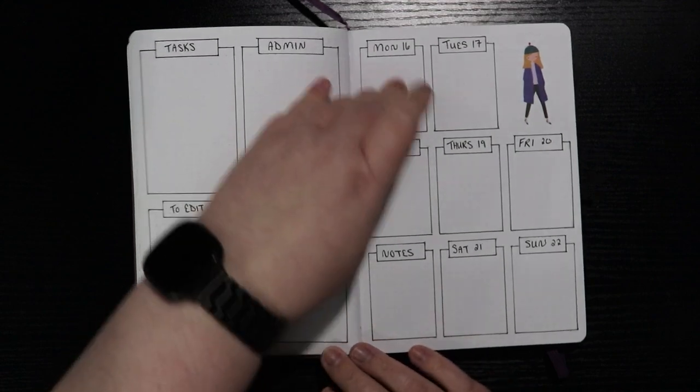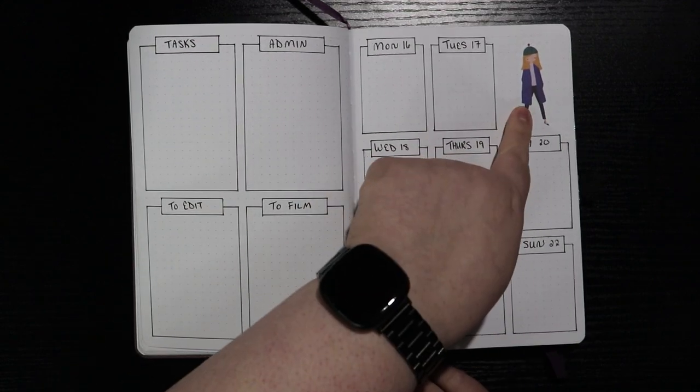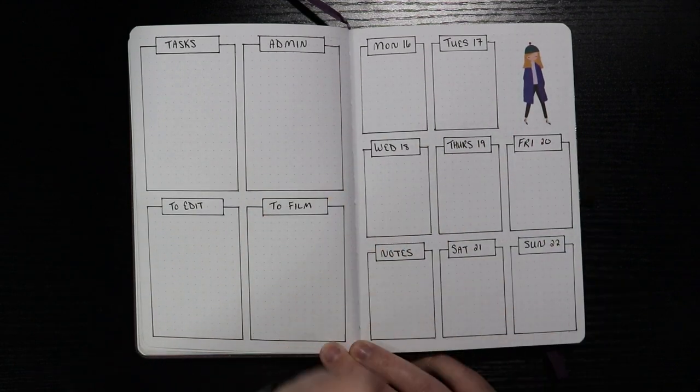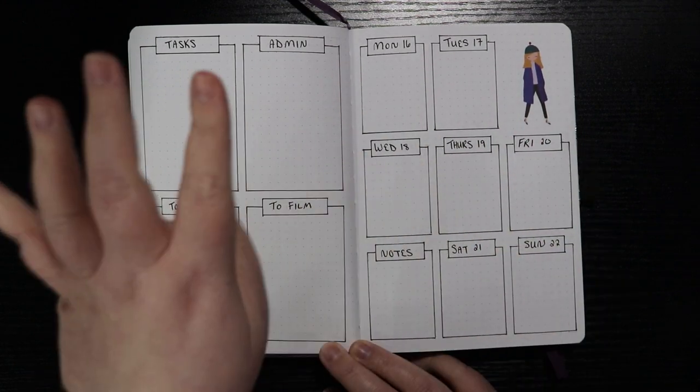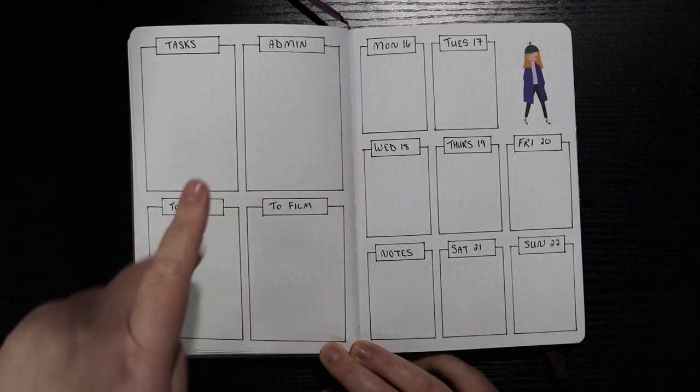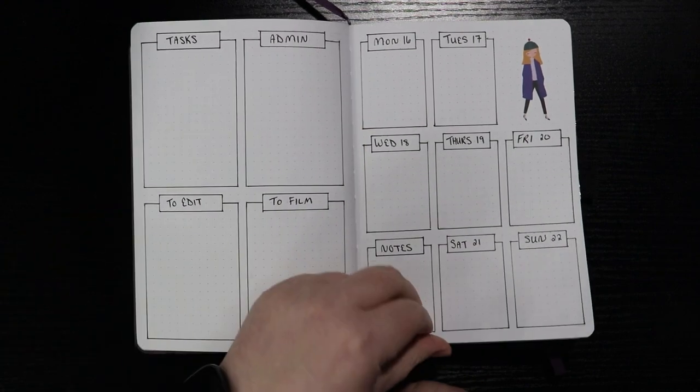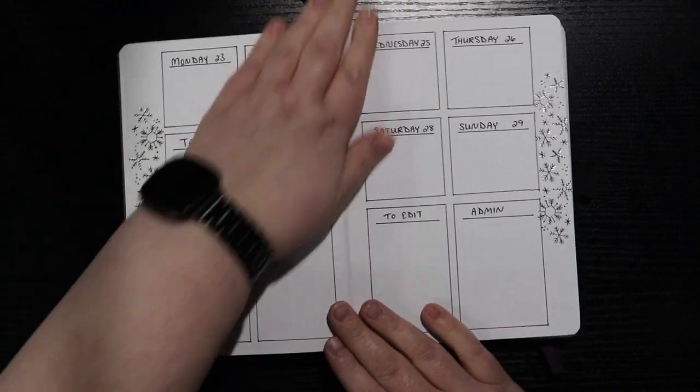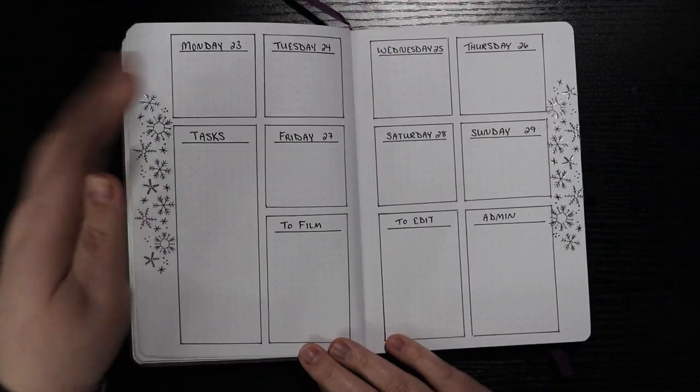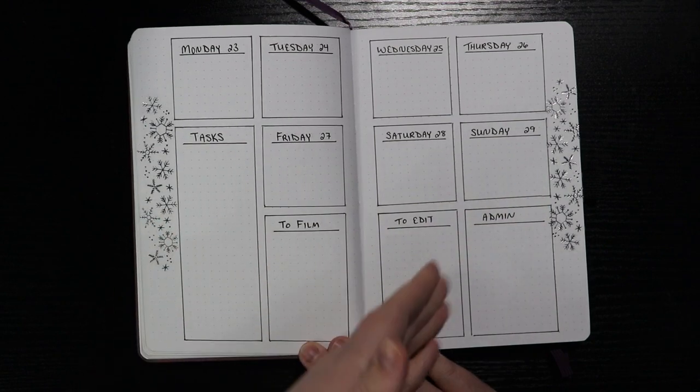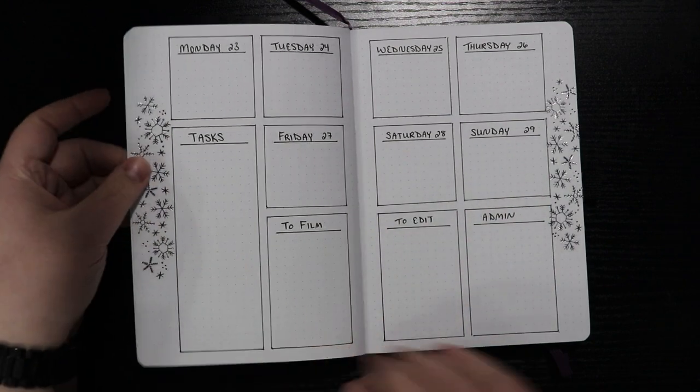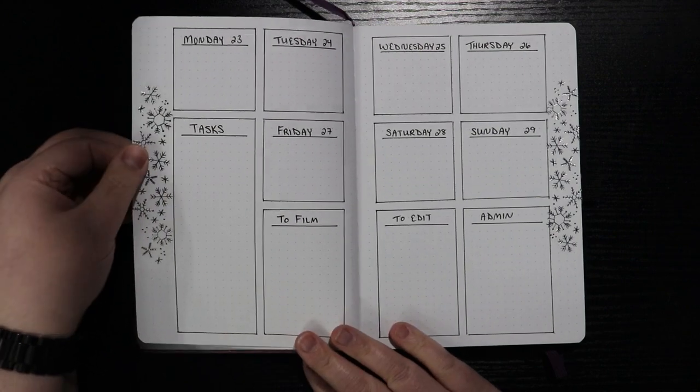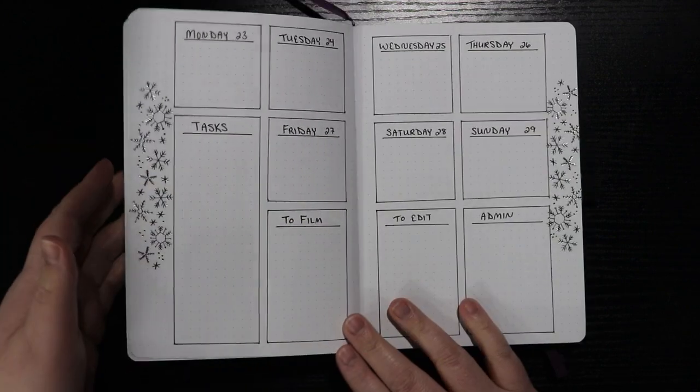This time I did Monday through Sunday with the notes and then actually remembered not to put in that top box. You can probably see the pencil lines cause I absolutely drew it in and then was like, girl, don't do it again. Tasks, admin to edit, to film. And then our final week and the final page of this planner is Monday through Sunday tasks to film, to edit, admin with some pretty snowflake designs on the side. And that is it for January.